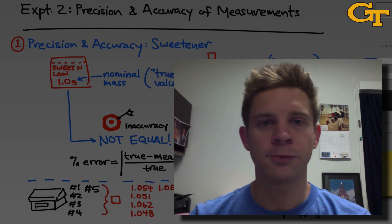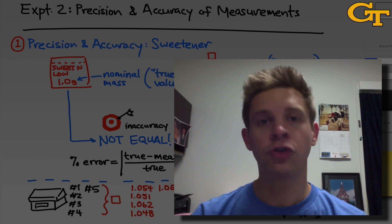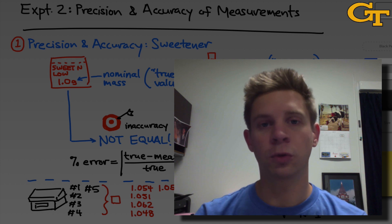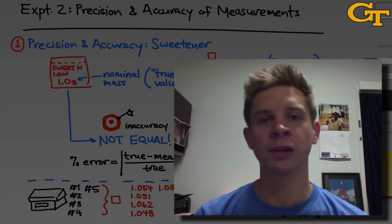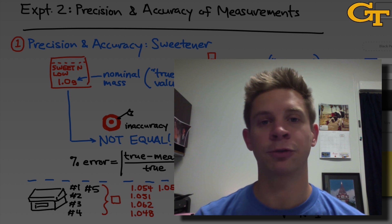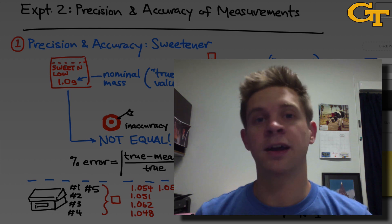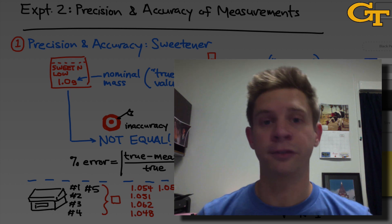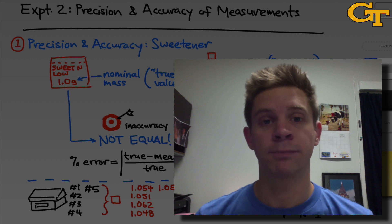Experiment 2 in Chem 1211 is titled Precision and Accuracy of Measurements. There are two overarching goals for this experiment. The first is to really solidify your understanding of laboratory glassware, particularly in the context of the precision and accuracy of different types of glassware.